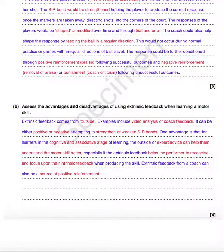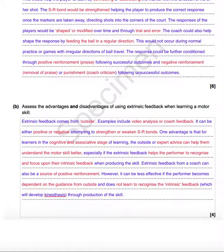Next advantage: extrinsic feedback from a coach can also be a source of positive reinforcement, so the coach can encourage the performer through the feedback, identifying whether they've done things well or whether they're close. Now for the disadvantages — remember that bold word: they wanted both advantages and disadvantages. However, it can be less effective if the performer becomes dependent on the guidance from outside. If the performer just relies on the coach, that can be a disadvantage because they don't learn to recognise the intrinsic feedback.